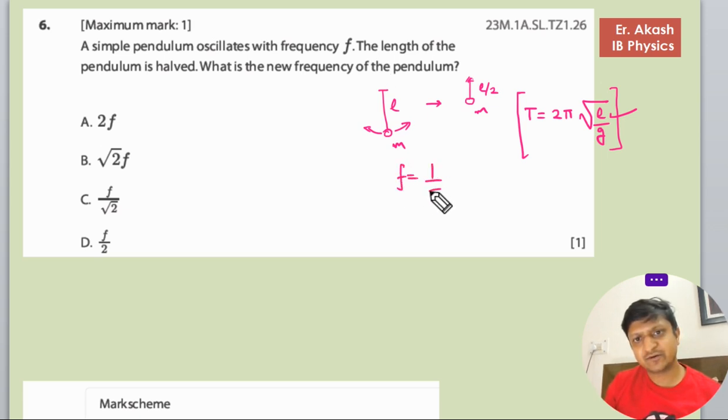f is equals to 1 by T, and T is this, so either we can find the T or then reciprocate, or we can put the formula directly also. So we will just find the value of T first, that is the 2π.